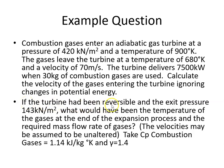Secondly, if the turbine had been reversible and the exit pressure 143 kN/m², what would be the temperature of the gases at the end of the expansion process and the required mass flow rate of gases? The velocities may be assumed to be unaltered. Take Cp combustion gases equals 1.14 kJ/kg·K and gamma equals 1.4.